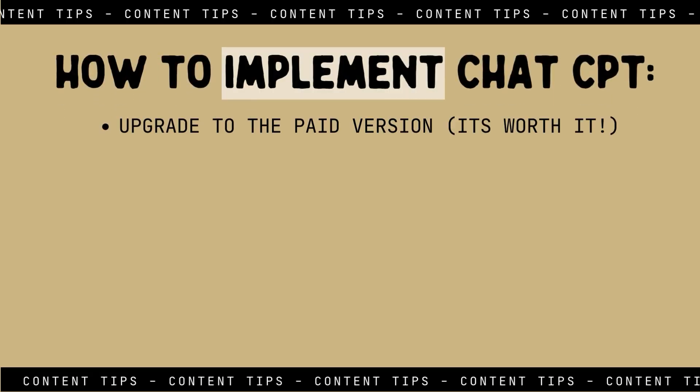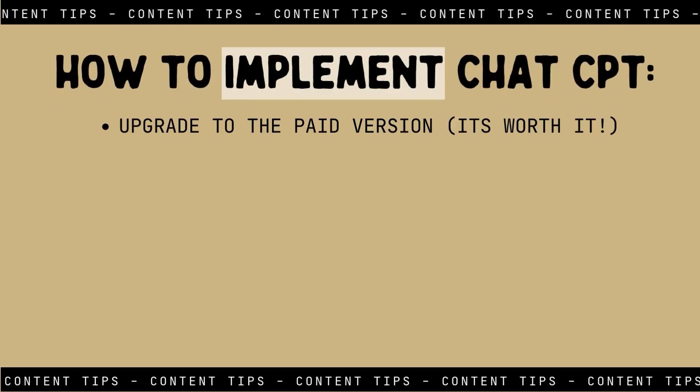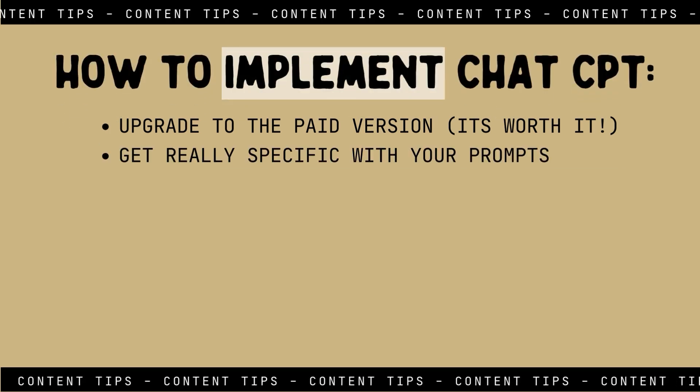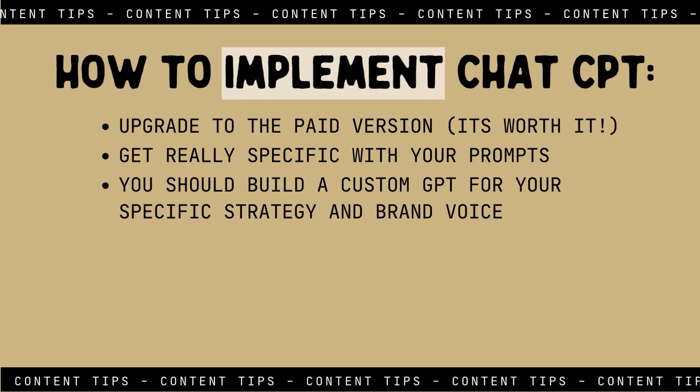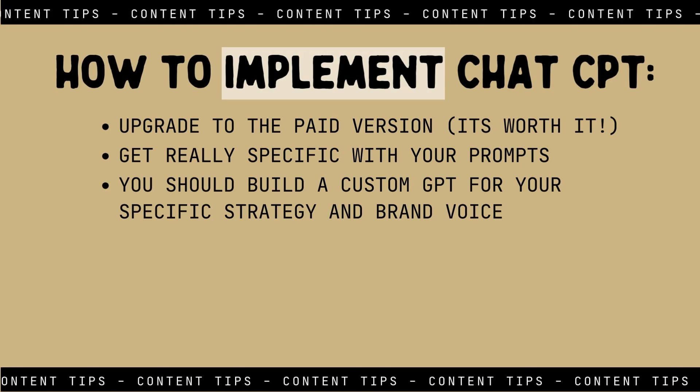As far as implementing ChatGPT into your workflow, it is 100% worth the money — you should upgrade to the paid version. Overall, it is faster, results are better, and you get access to a much higher quality of AI. You really do have to understand how you are prompting it. If you go in and say 'give me 10 content ideas,' it's going to give you garbage. You have to inject yourself into these tools — plug in your content strategy, your brand voice, that human input — in order to get an output that sounds like you.